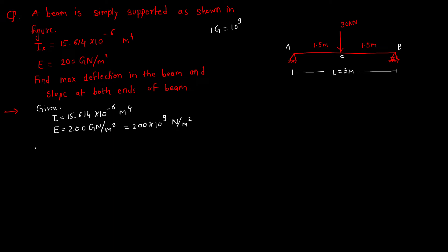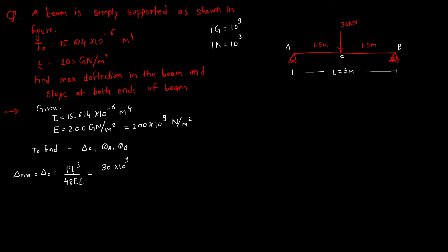Now we'll write the formulas. We have to find delta_C (maximum deflection) and theta_A and theta_B (slope at ends). The formula for maximum deflection is: δ_max = PL³ / 48EI. Substituting: P = 30 × 10³ N, L = 3 m, so L³ = 27, divided by 48 × 200 × 10⁹ × 15.614 × 10⁻⁶.